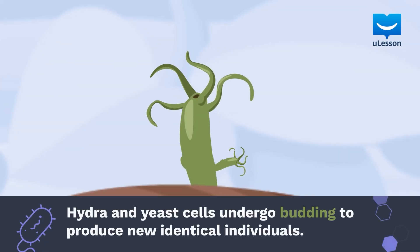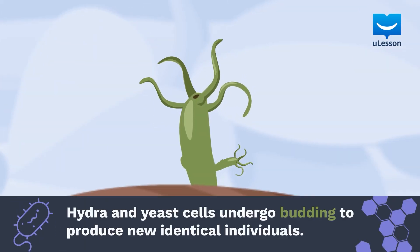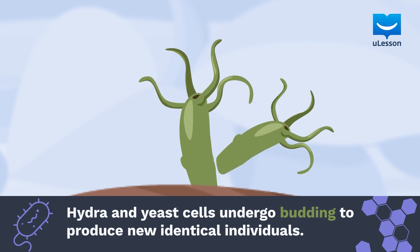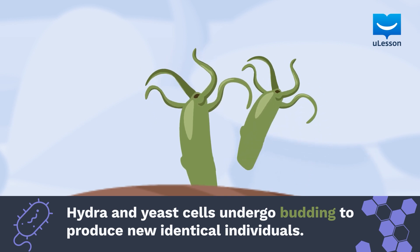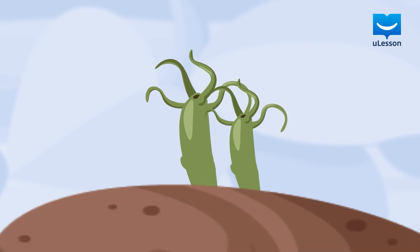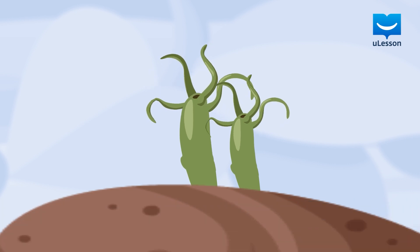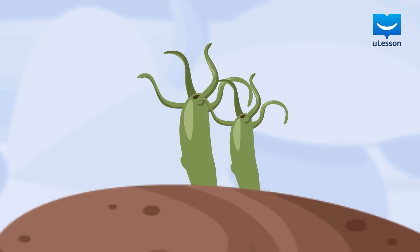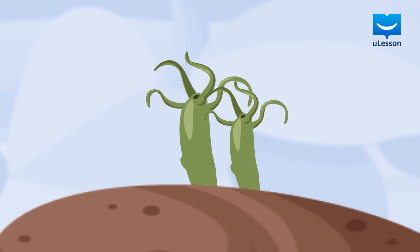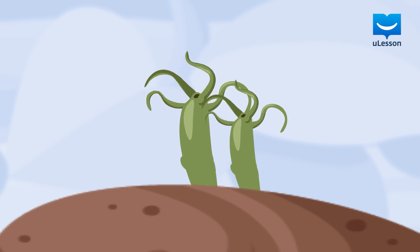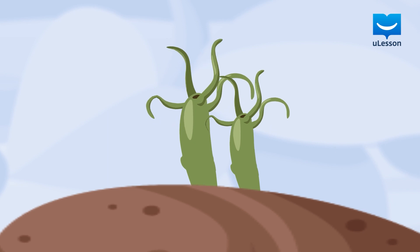Also, hydra and yeast cells undergo budding to produce new identical individuals. Budding occurs when a parent organism forms an outgrowth called a bud, which then grows into a new organism that later separates from the parent organism.